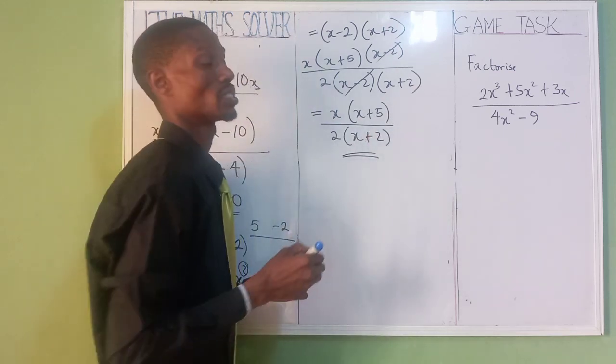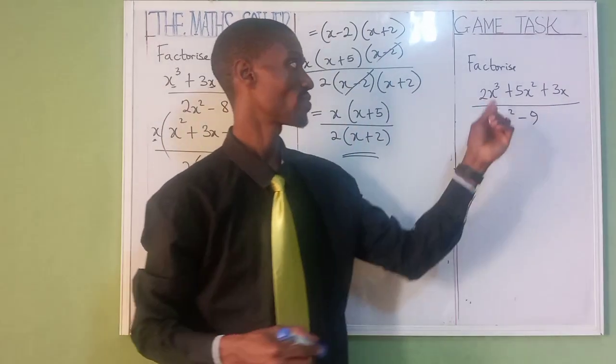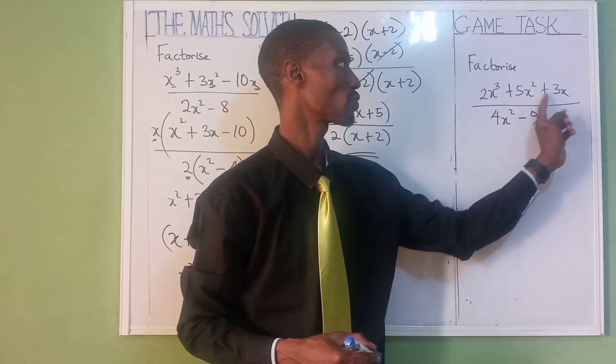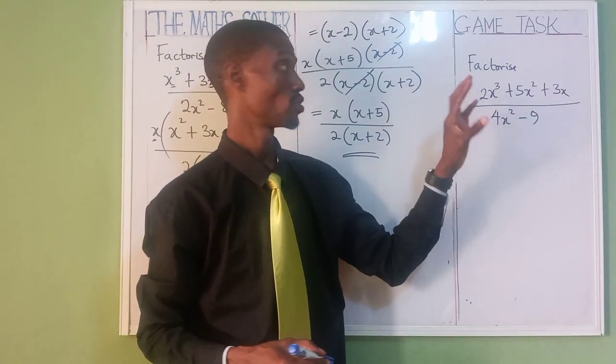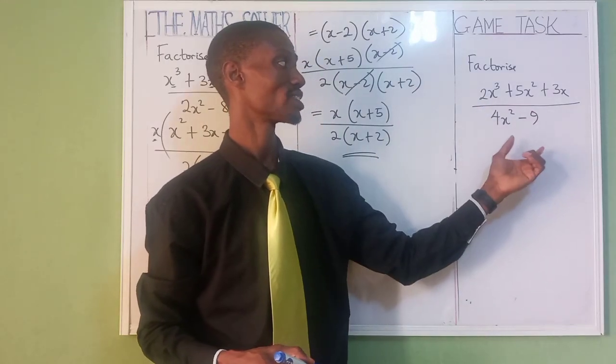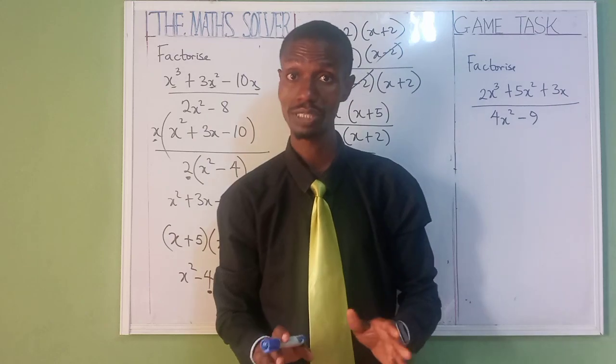Simple and straightforward. It's as simple as that. Please try and solve this practice problem. As you can see, 2x³ + 5x² + 3x divided by 4x² - 9. Factorize it. Bring out what's common first, and also factorize the denominator. Try and solve it. It's very simple.